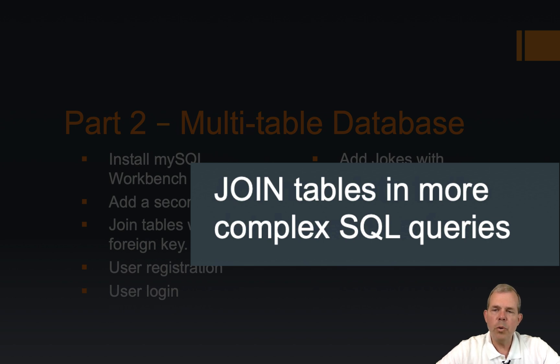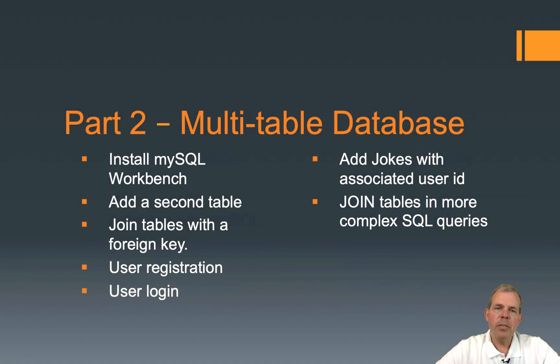A SQL query with a join takes two tables and displays them in one list. And so that's what we'll learn in part two.